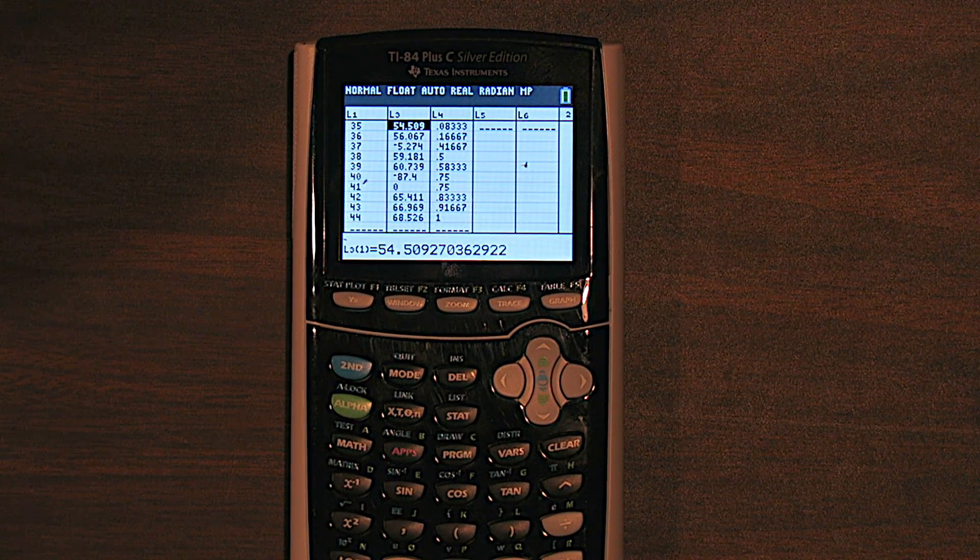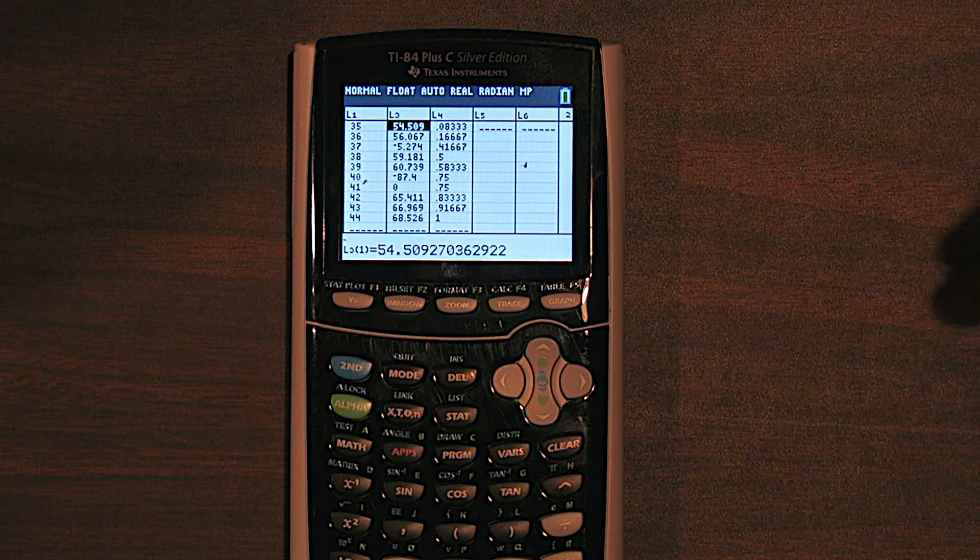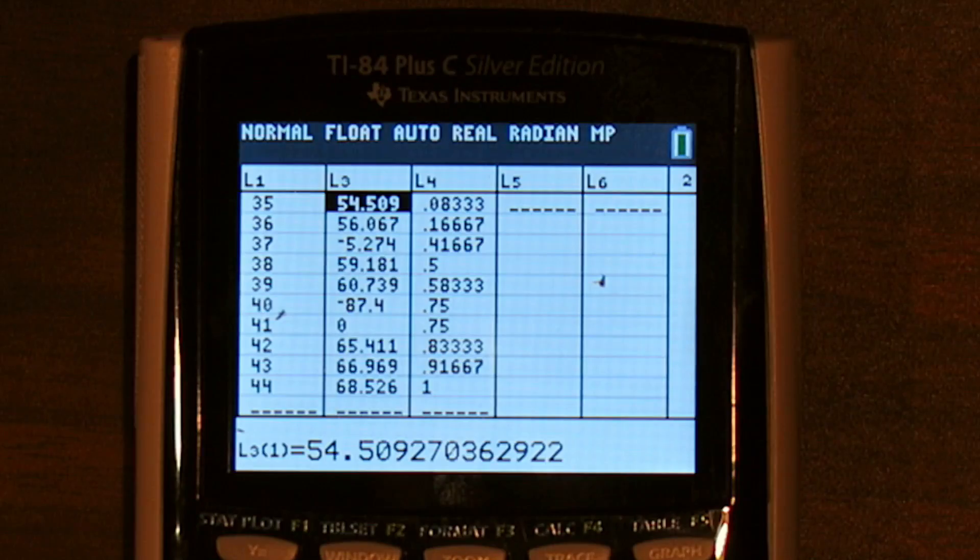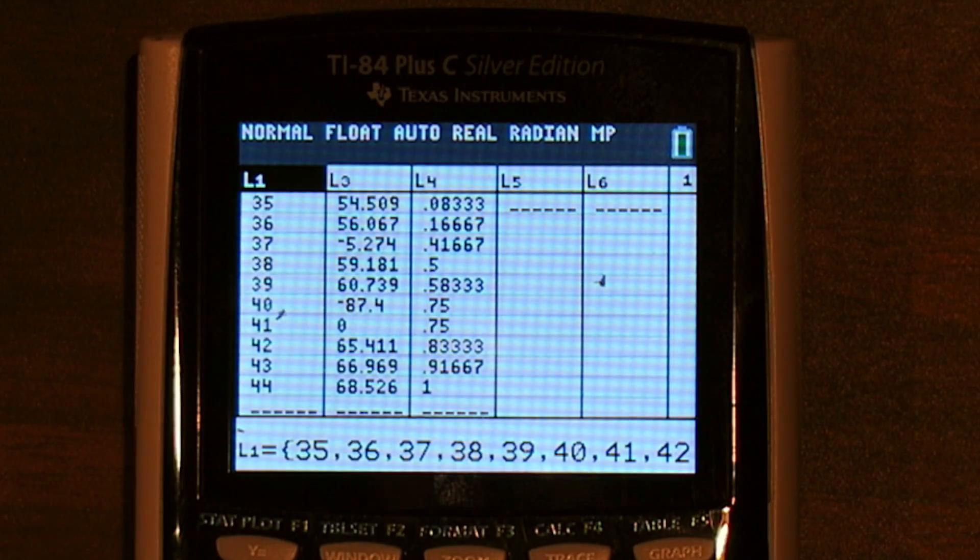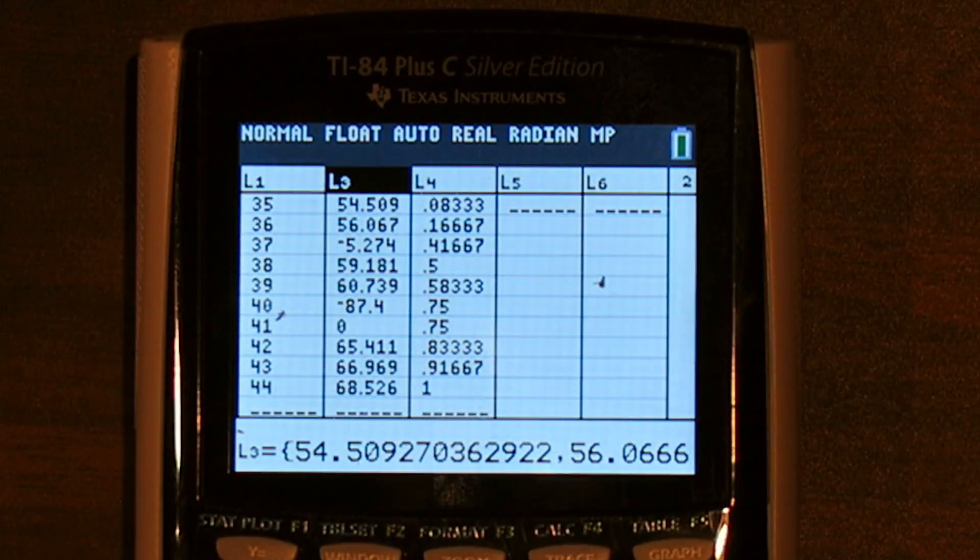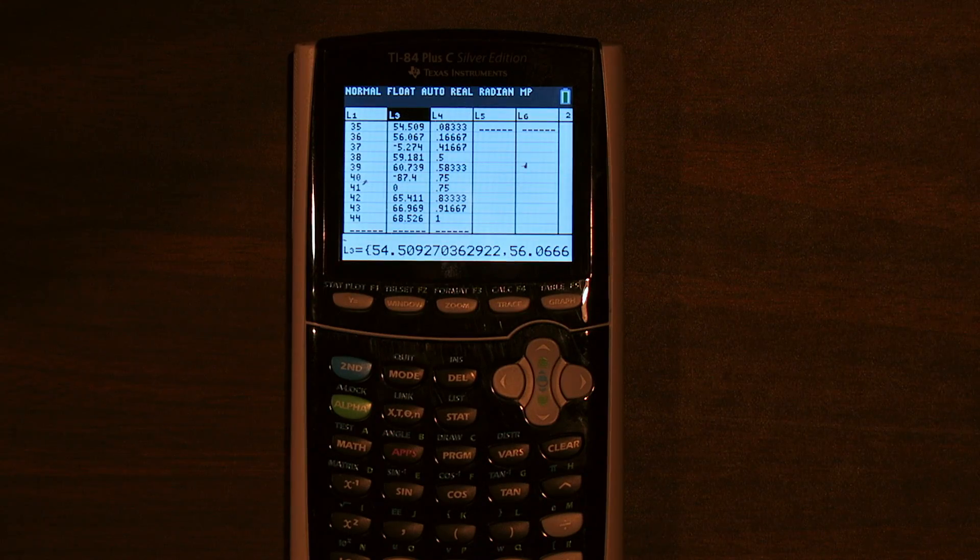One of the most common questions I'm asked about TI-84 is how do you undelete a list? So right now, if I look at the names of these lists, we have list 1 right here, then there's no list 2 and it jumps right to list 3. So list 2 is missing, it's been deleted.